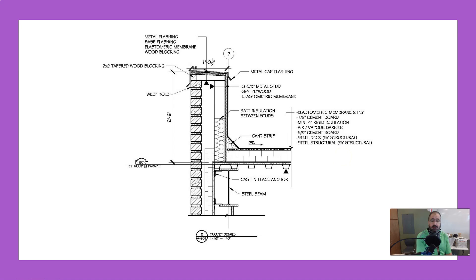Looking at how these are structured: most roofs in a house have insulation on the underside — the interior or attic side of the roof. It's not so in commercial. In commercial, they put the insulation — this is a rigid foam insulation — on the exterior.